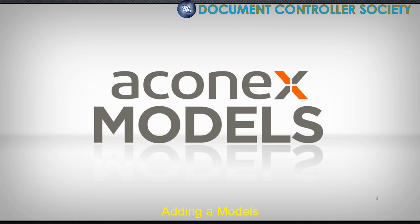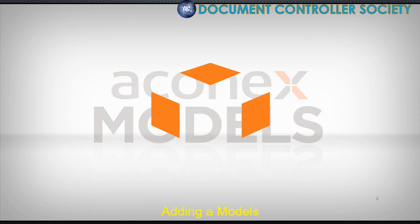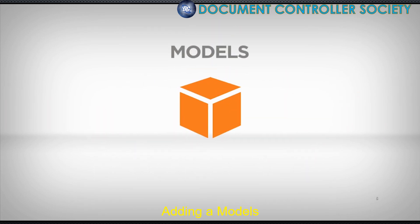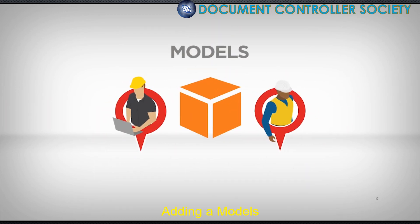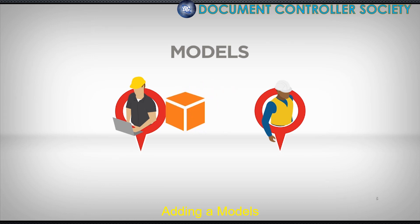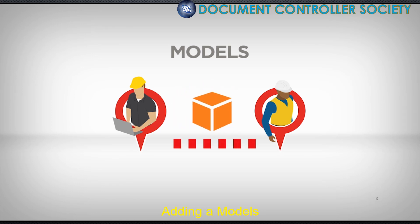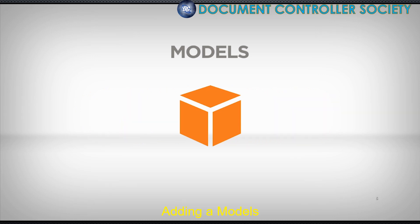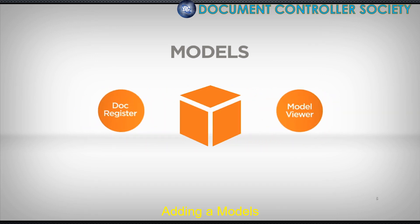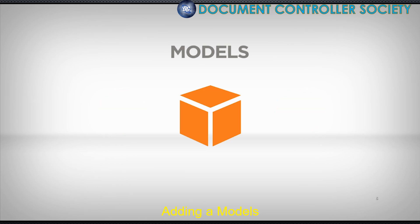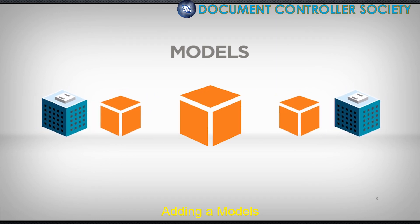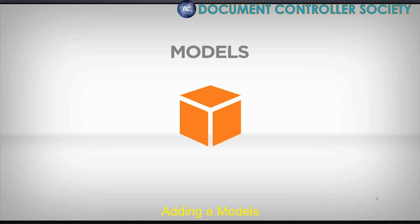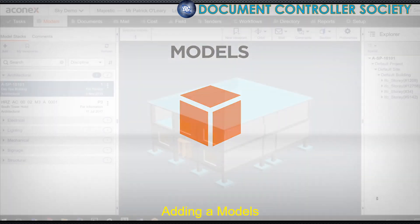The integration between the document register and models allows you to better manage design coordination and model access across your project team. You can now send and receive models, easily identify models that are connected, and quickly jump from the document register into the model viewer. And as with any document in your register, you can easily distribute the model with people in other organisations through a mail or a transmittal.